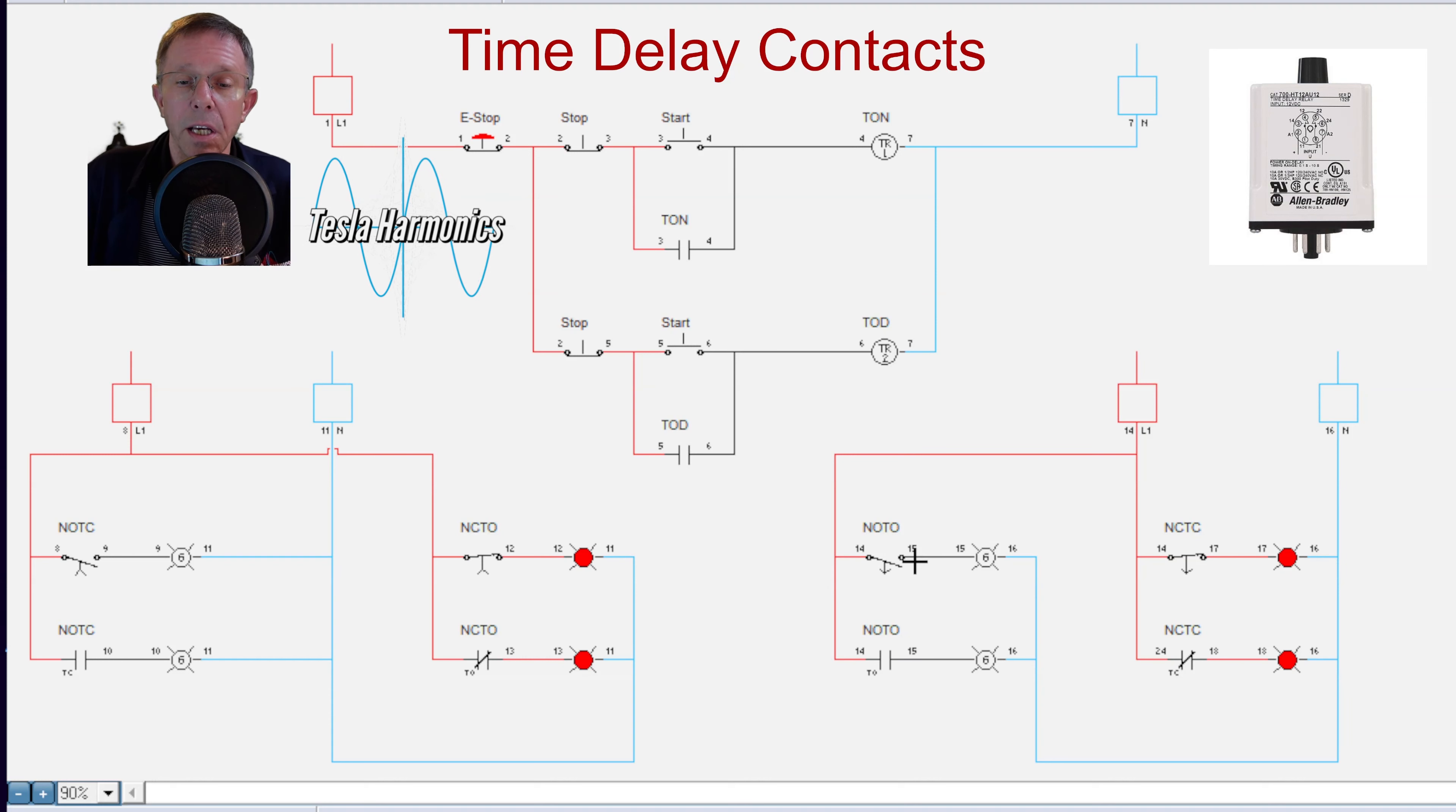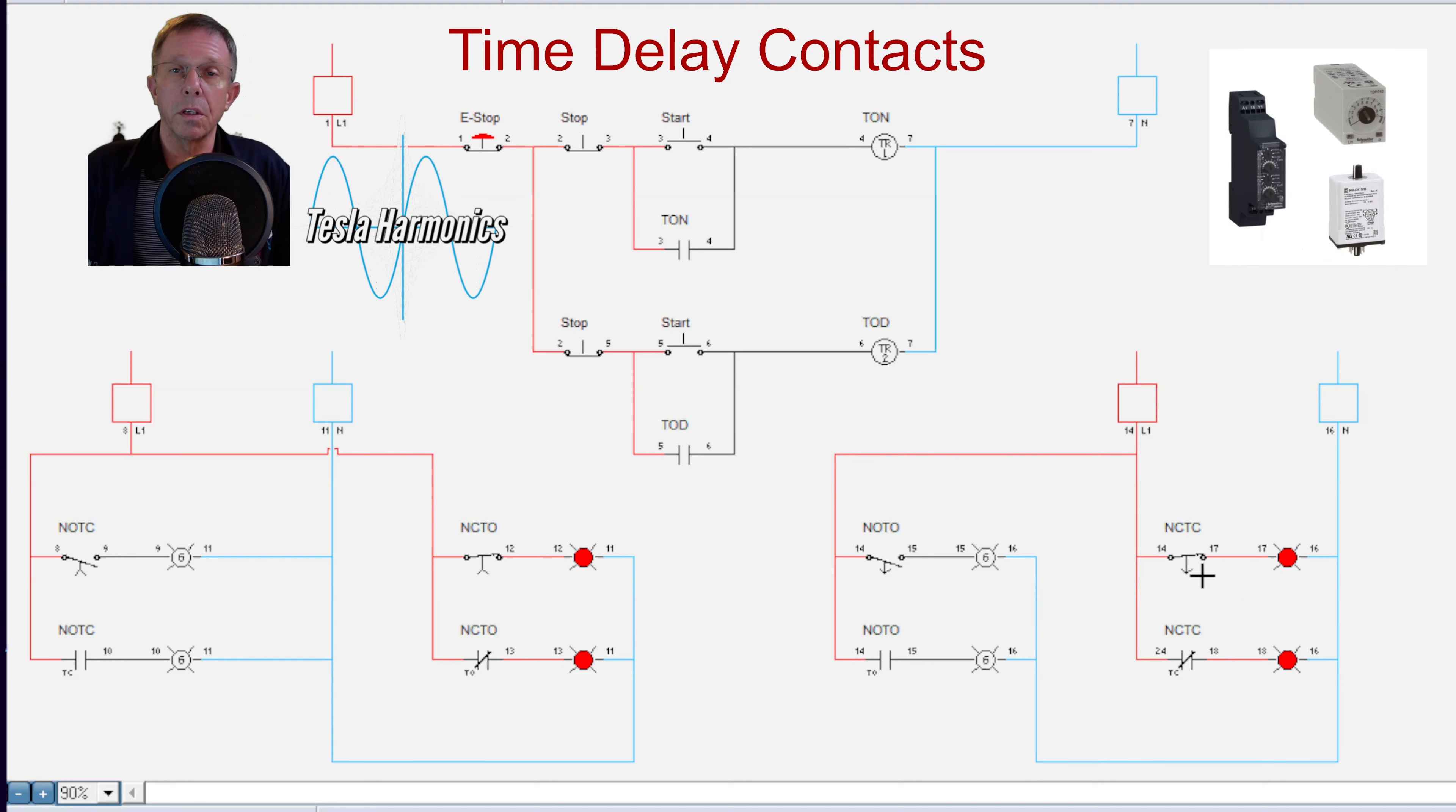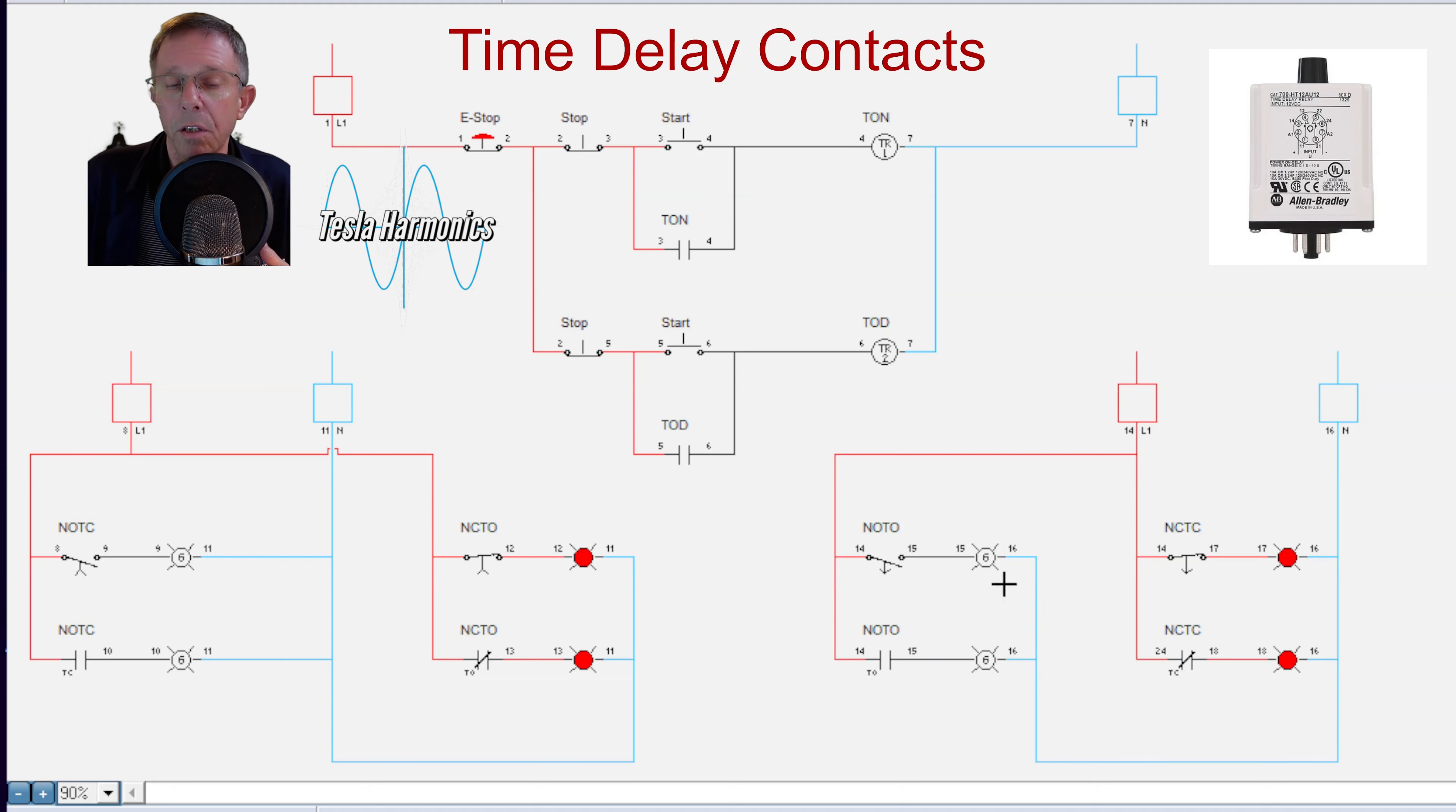And then when I kill power to that coil, then it's going to time before it drops out and turns off the green light. And remember, this contact does the same thing. This is just two representations of the exact same thing. With the normally closed on the time off delay, if I use those, they're going to be passing power to whatever they're connected to. And when the timer gets done counting for this one to go off, then these will go back on. All right, let's look at how that operates.